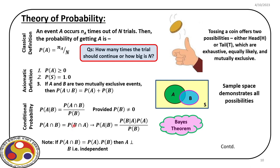Similarly, we can write P(B∩A). These two together lead to a very important relation: P(A|B) = P(B|A) × P(A) / P(B). This is called Bayes' theorem, a very important derivation in the theory of probability. If there is no region common to A and B — i.e., A∩B = 0 — then P(A∩B) = P(A) × P(B), which means A is independent of B.